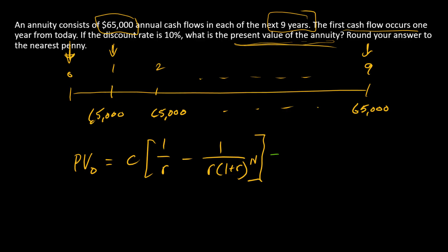All right, so if we want to plug in values here to solve, we have $65,000 as the payment amount, 10% as the discount rate, and 9 as the exponent or the number of payments.